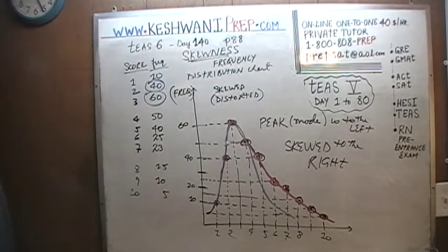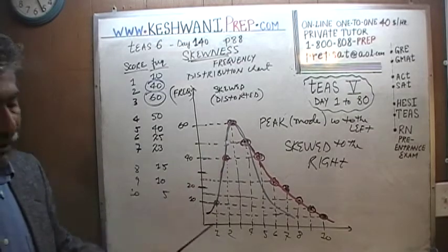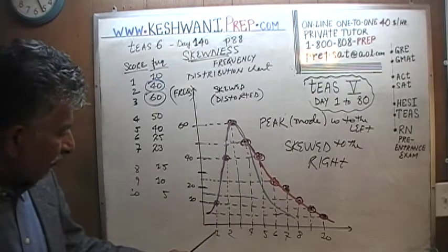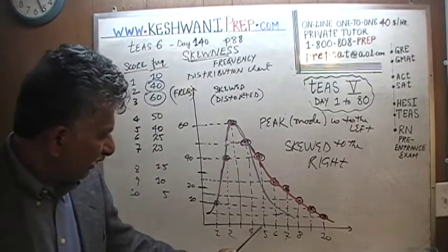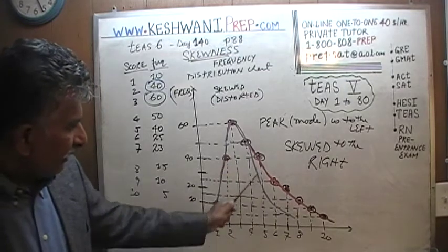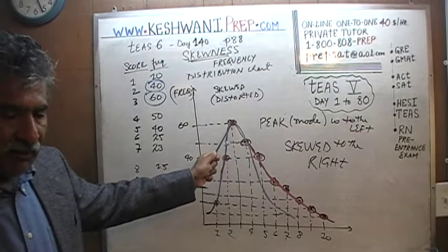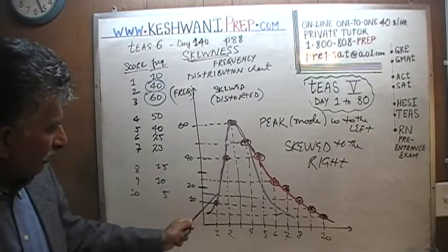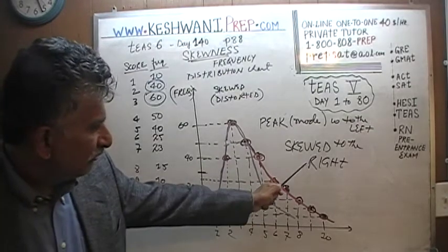This graph is skewed to the right because it has a peak which is on the left. The peak is not centered — the values go all the way from 1 through 10, so I would have expected the peak to be somewhere in the center around 5. But the peak is to the left, and when we get to the right-hand side, it doesn't take the same shape. It's distorted — which is the same as saying it's skewed to the right.